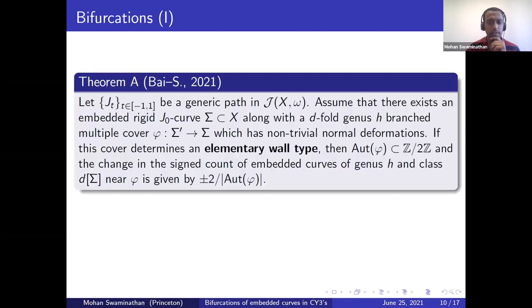Here's our first result on bifurcations. Let's say J_t is a generic path of almost complex structures. And assume that at time zero, we have an embedded curve Σ, which has the property that it itself is rigid, but it has a multiple cover, which is not rigid. That is, it has a non-trivial normal deformation. Let's say φ from Σ' to Σ is a multiple cover, which has a non-trivial normal deformation. Let's also make the technical assumption that this curve determines an elementary wall type. Then we can draw the following conclusions.